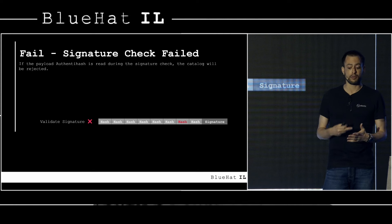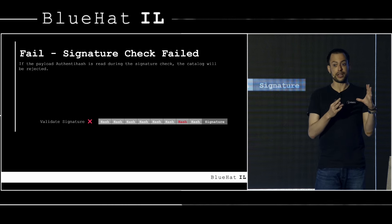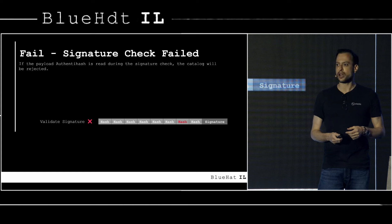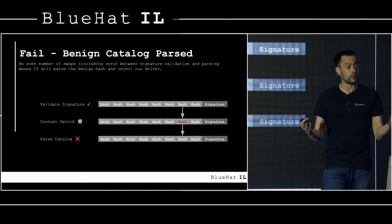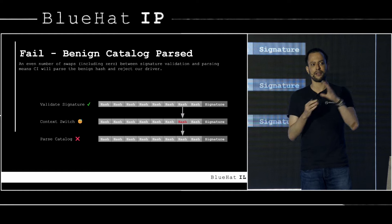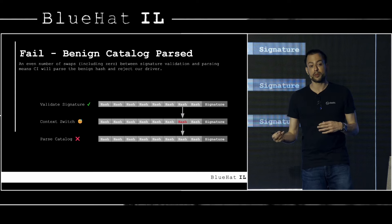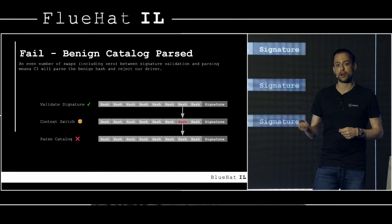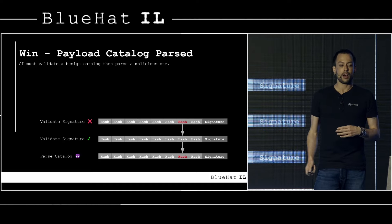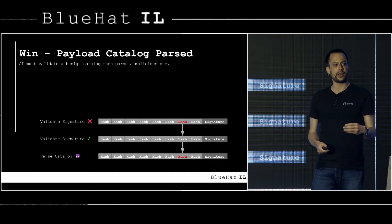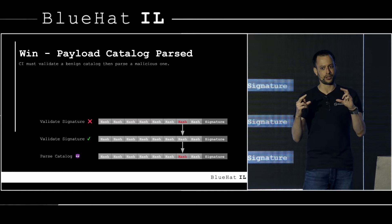One failure mode: if the malicious AuthentiHash is in place during the validation step, code integrity sees a bad signature and fails immediately. Another failure mode: the signature check succeeds but an even number of swaps — including zero — occurs between validation and parsing. I win if code integrity validates the benign signature and then parses and accepts my payload AuthentiHash.